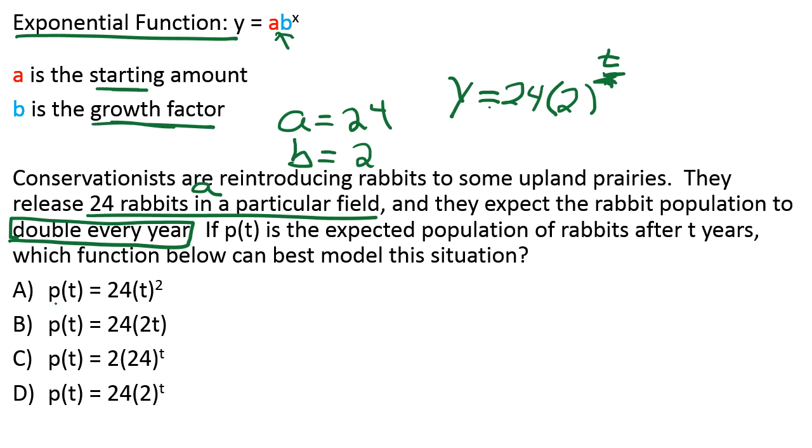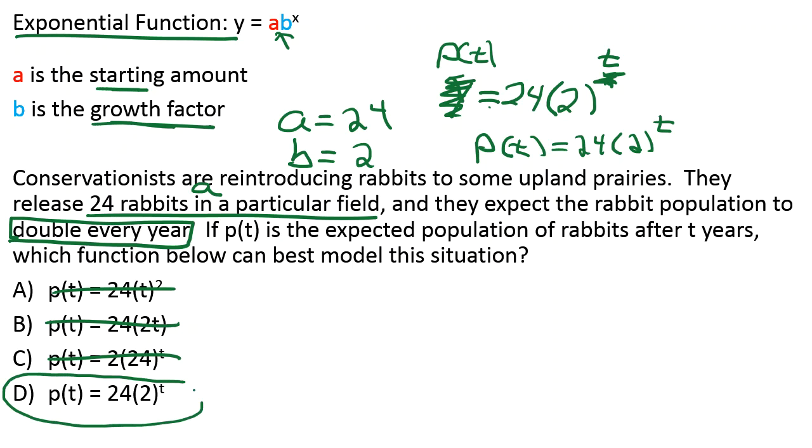And it also looks like they're using P of T in place of Y. Well, that's okay. We can just call Y P of T. My answer should be P of T equals 24 times 2 to the T. Looking through the answer choices, 24 times 2 to the exponent of T. 2 times 24 T. Oh, that is so close, but not quite it. That doesn't have an exponent. That exponent is 2, not T. Looks like D has to be the correct answer choice.